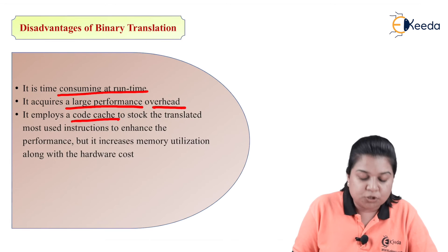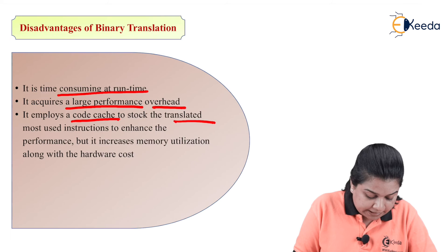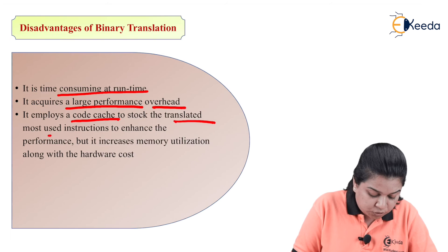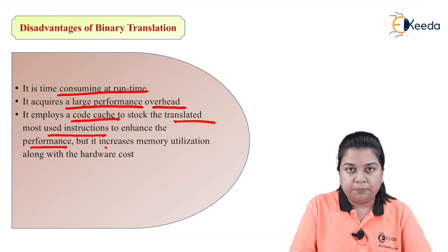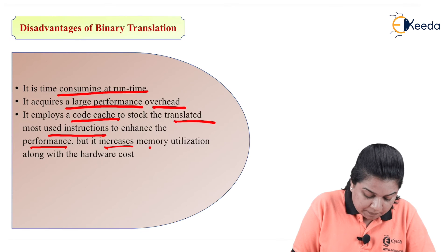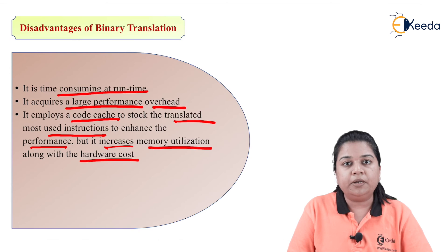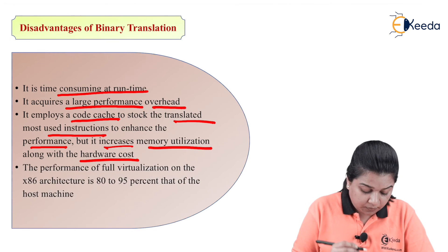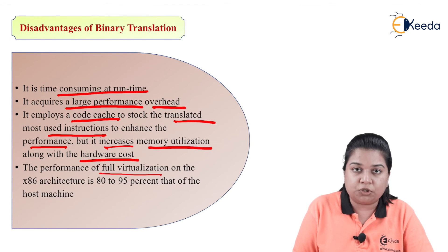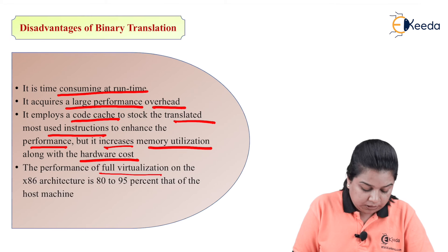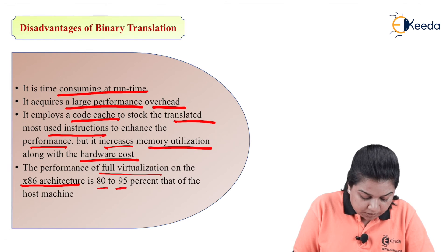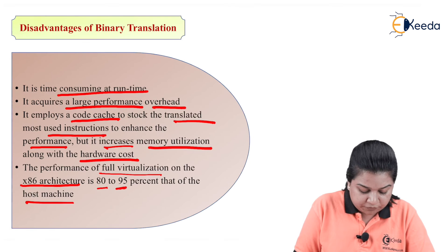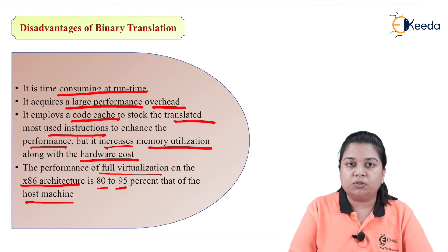Disadvantages of binary translation: it is time-consuming when done at runtime and acquires a large performance overhead. It employs a code cache to store translated frequently-used instructions to enhance performance, but this increases memory utilization and hardware cost. The performance of full virtualization on x86 architecture is 80 to 95 percent of the host machine.